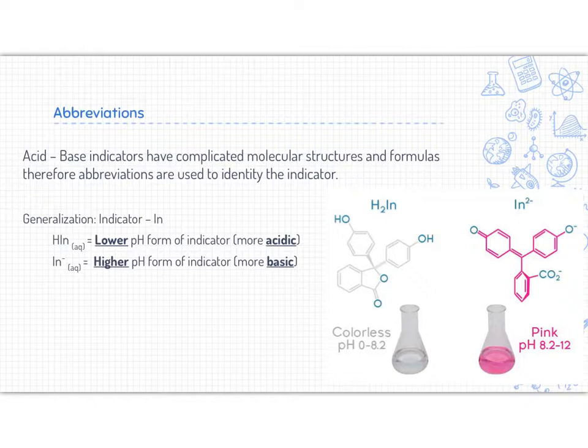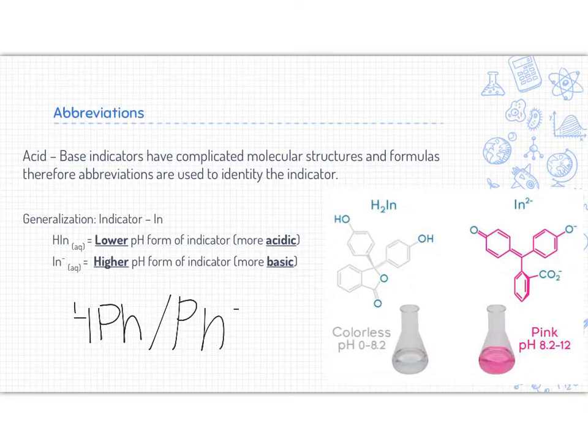So for instance, if we used phenolphthalein, if you look on the back of your periodic table in the acid-base indicators and find phenolphthalein, it has two things beside it: HPH and PH minus. The PH stands for phenolphthalein. Only phenolphthalein has this indicator abbreviation. PH minus means it's the more basic form, and HPH, think H is acidic, would be the more acidic, so the lower pH form.